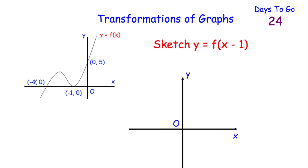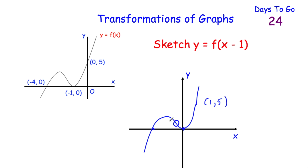Again with the same graph of y equals f of x, going through the points negative 4, 0; negative 1, 0; and 0, 5 — now sketch y equals f of x minus 1. With minus 1 inside the brackets, it translates the graph one square to the right. So negative 1, 0 moves to the origin 0, 0; the point 0, 5 moves to 1, 5; and negative 4, 0 moves to negative 3, 0.